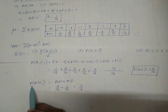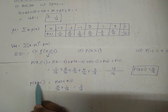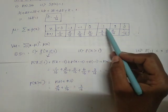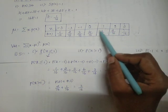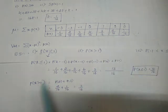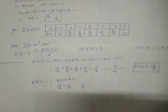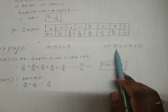Note: if they had asked P(X ≥ 1), we would also include x = 1. But since it says strictly greater than 1, we exclude 1 and consider only the values after it.